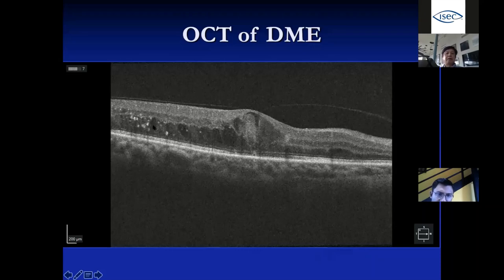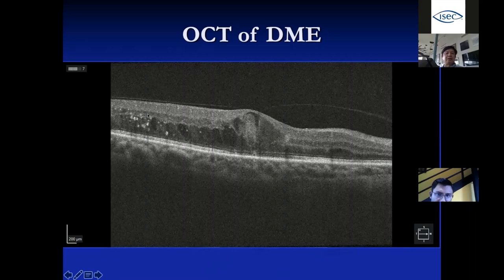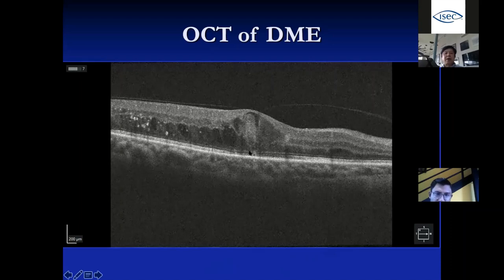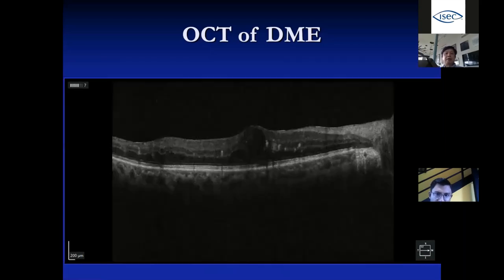In another example, you can see cyst collections of fluid inside — distortion of the inner architecture of different nerve layers. There are also white hyper-reflective dots, thought to represent activated microglial cells present in inflammatory responses. Diabetic macular edema is also an inflammatory response — an injury to the eye. If we can get rid of all this edema, this patient can see reasonably well, because the integrity of the photoreceptors — the outer white lines — is relatively preserved.